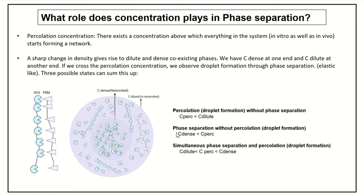So this is phase separation: the dense phase and dilute phase are separated. When they reach the percolation threshold, these two concentrations lead to formation of small droplets due to interaction between these networks. I have illustrated this using SH3 and PRM domains — they interact with each other and start forming networks which we observe in the form of small droplets.